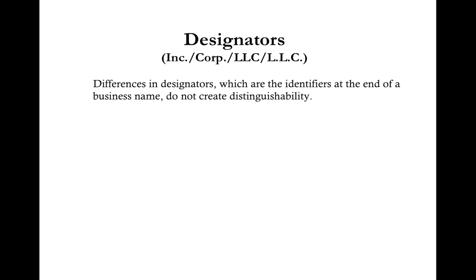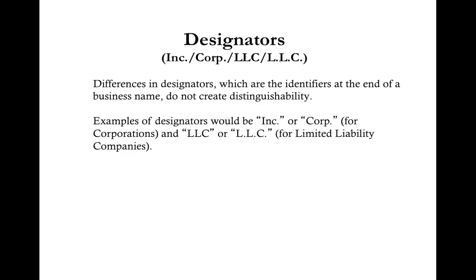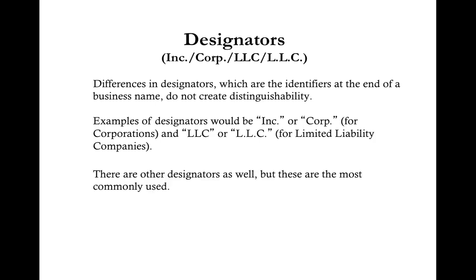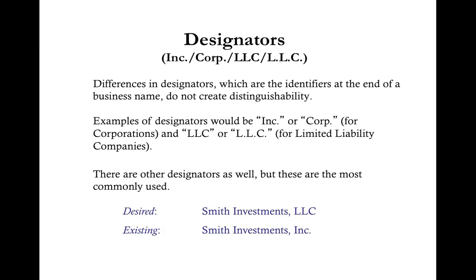Differences in designators — which are the identifiers at the end of a business name — do not create distinguishability. Examples of designators would be Inc. or Corp for corporations, and LLC or L.L.C. for Limited Liability Companies. For example, if your desired LLC name is Smith Investments LLC but during the search you found Smith Investments Inc., your desired LLC name would not be available for use. You would have to think of an alternative name, such as Smith Financial Group LLC.